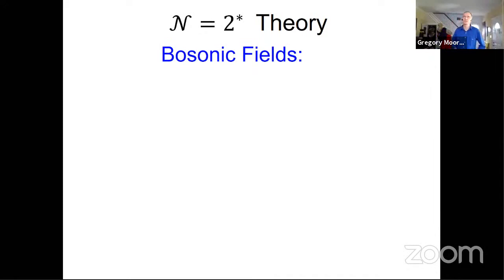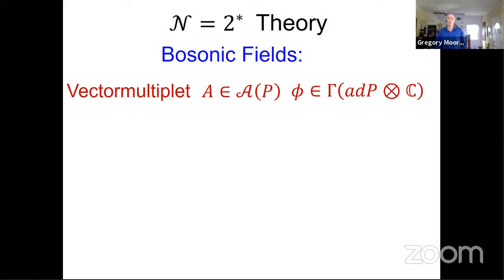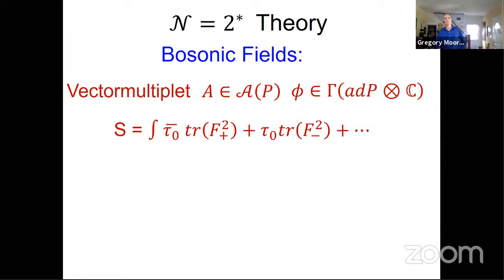It's a supersymmetric theory with bosonic fields and fermionic fields — I'll only show you the bosonic fields. The first set of bosonic fields comes from what's called a vector multiplet: a connection on the principal bundle P and a Higgs field, a section of the complexified adjoint bundle. The action is the standard Yang-Mills action. Tau naught is the complexified coupling; F+ and F- are the self-dual and anti-self-dual projections, so metric dependence enters there. This is a superconformal theory, so tau naught doesn't run — it's a conformal parameter.